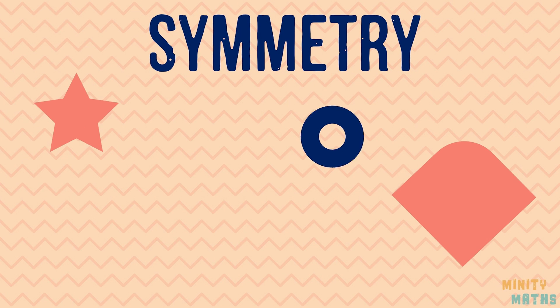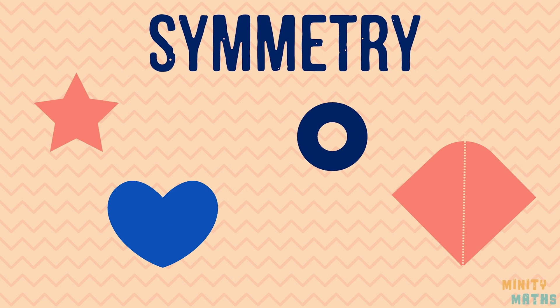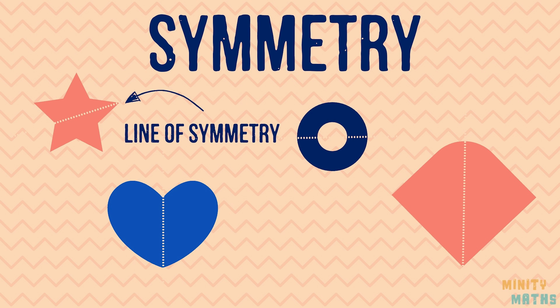In maths, symmetry refers to shapes which are identical on both sides. A line of symmetry is a line that cuts a shape exactly in half, having one side that exactly mirrors the other side. A line of symmetry may also be called the mirror line, or axis of symmetry.